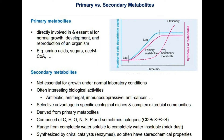A primary metabolite is something that is directly involved in the essential normal growth, development, and reproduction of the organism — for example, amino acids and sugars.